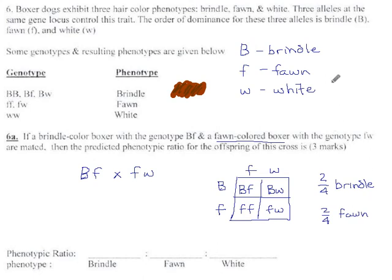So our phenotypic ratio would be, you could say it's 2 to 2, but just like with a fraction, you would not normally write 2 over 2, you would reduce that. If you get a ratio of 2 to 2, you should reduce that to 1 to 1, which means equal numbers of brindle and fawn. 1 to 1 brindle to fawn.